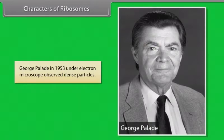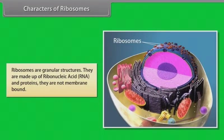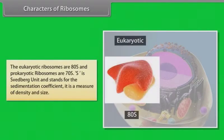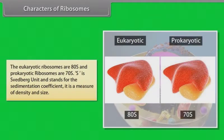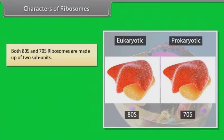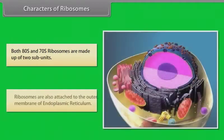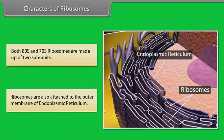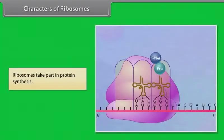Characters of ribosomes: George Palade in 1953, under the electron microscope, observed dense particles. Ribosomes are granular structures made of ribonucleic acid (RNA) and proteins; they are not membrane-bound. The eukaryotic ribosomes are 80S and prokaryotic ribosomes are 70S. S is the Svedberg unit and stands for the sedimentation coefficient — a measure of density and size. Both 80S and 70S ribosomes are made up of two subunits. Ribosomes are also attached to the outer membrane of the endoplasmic reticulum and take part in protein synthesis.